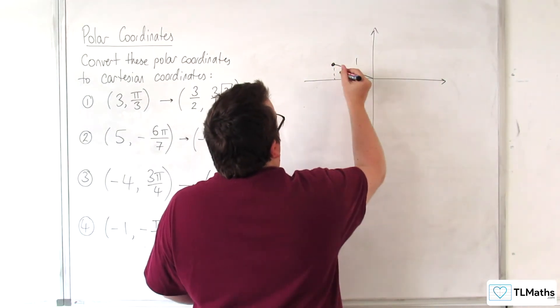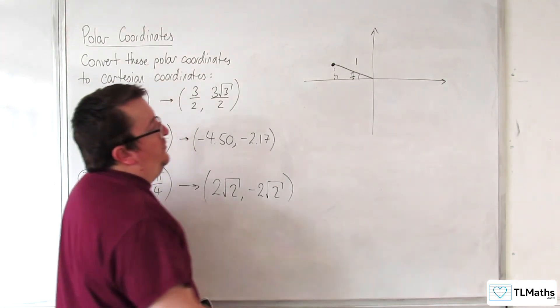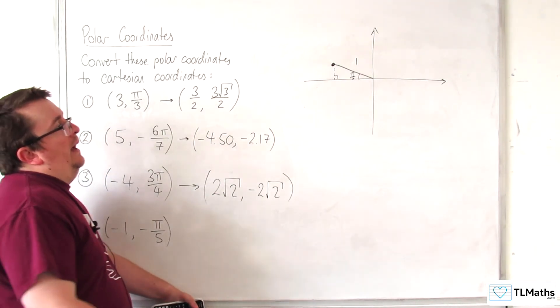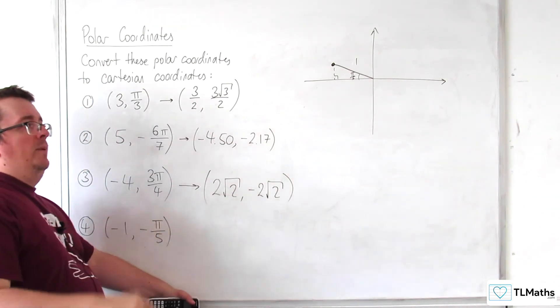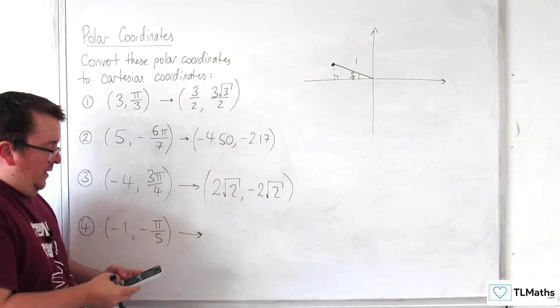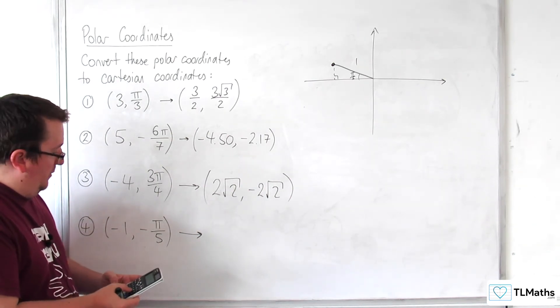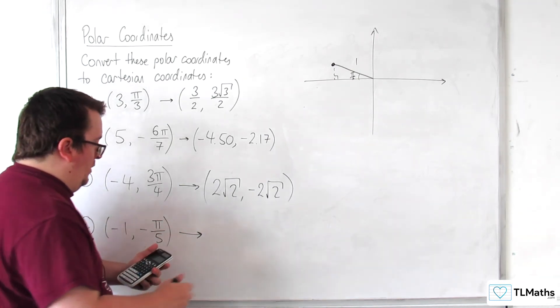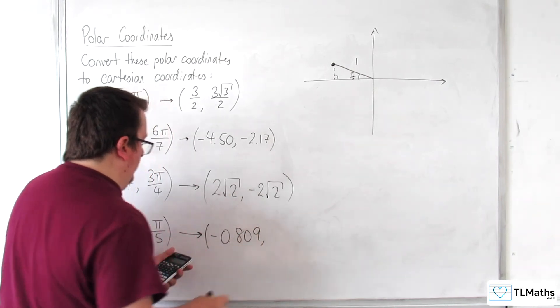So, we could work out the Cartesian coordinates by doing minus 1 times cosine pi over 5, then positive 1 sine of pi over 5. Or, we can do r cosine theta. So, minus 1 times cosine of minus pi over 5, which is minus 0.809 to three significant figures.